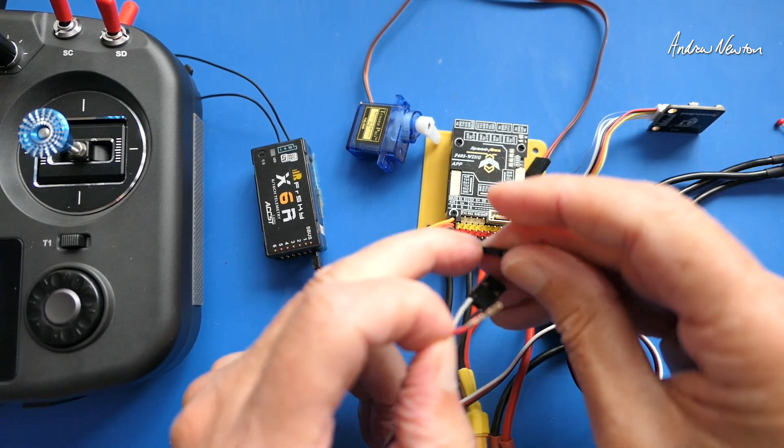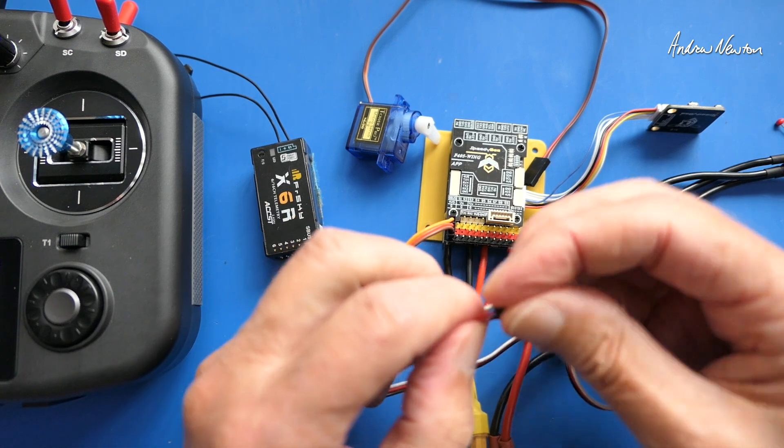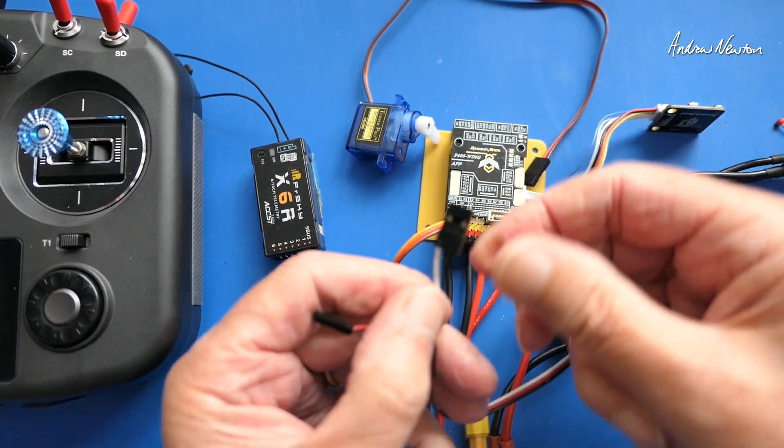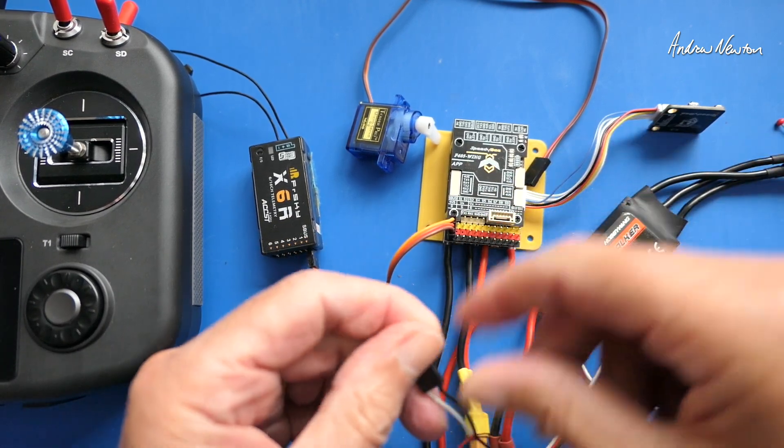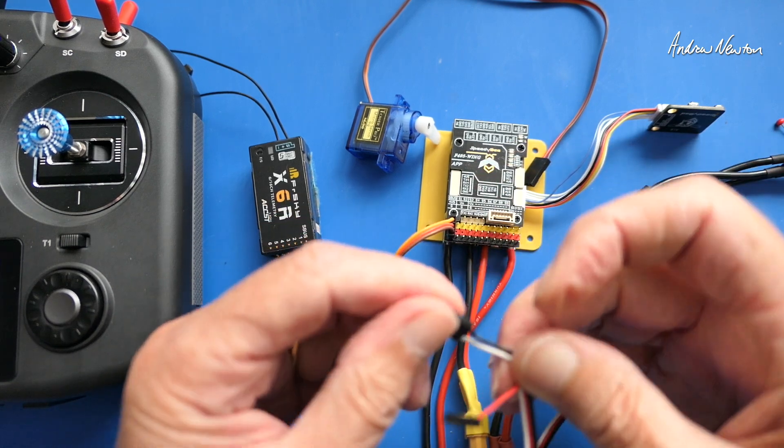So what we need to do is pop that red wire out and make it safe. I'll just pop it into a little one wire terminator there. So now we only have the ground and the signal wire going into the flight control board.